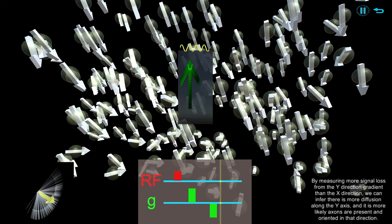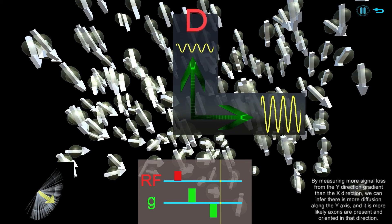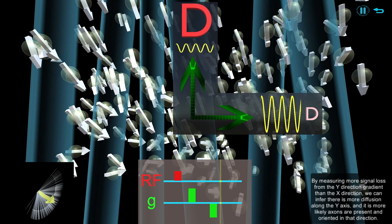By measuring more signal loss from the y-direction gradient than the x-direction, we can infer there is more diffusion along the y-axis, and it is more likely axons are present and oriented in that direction.